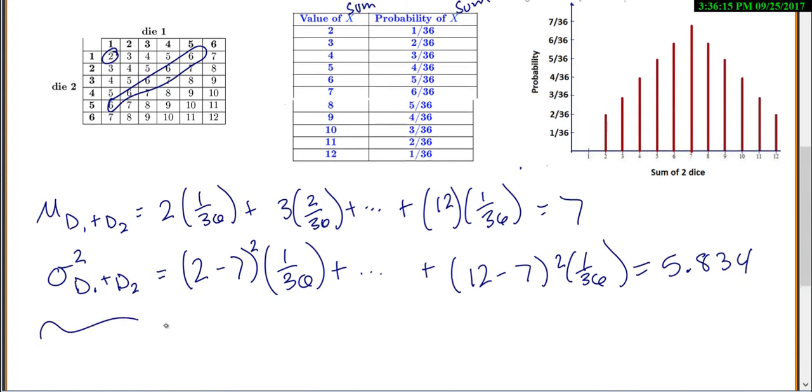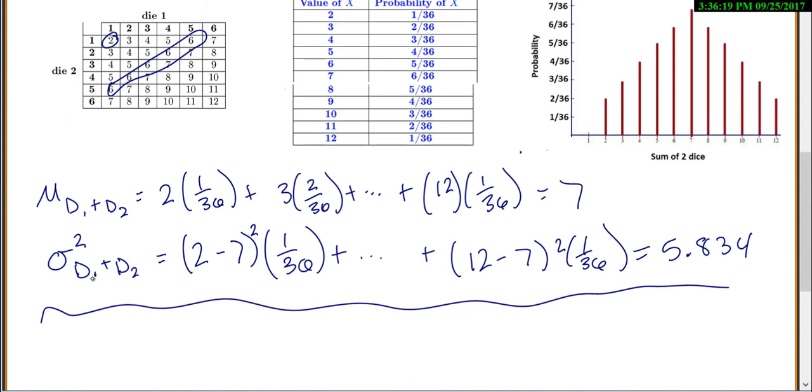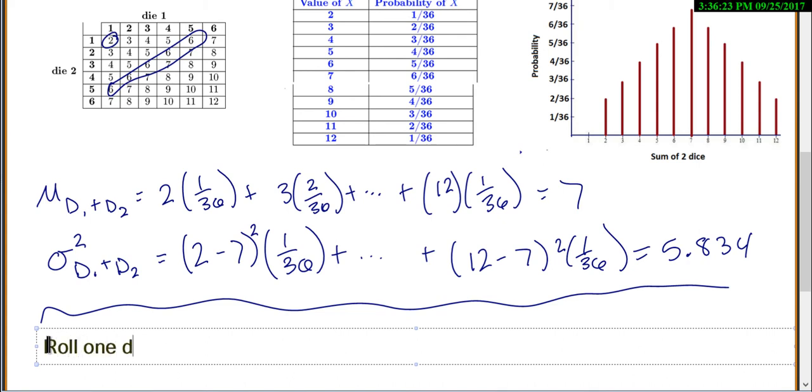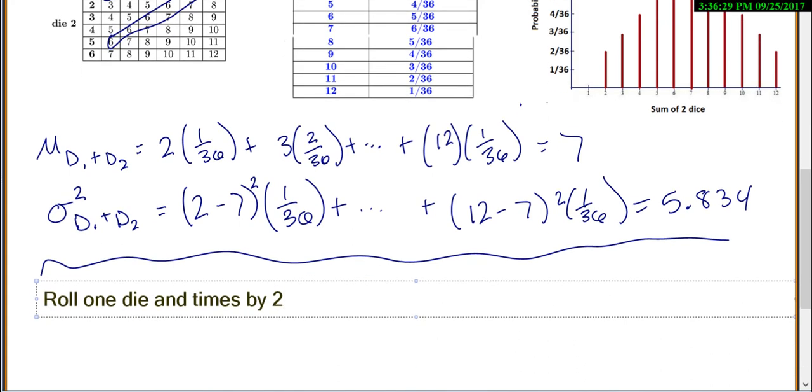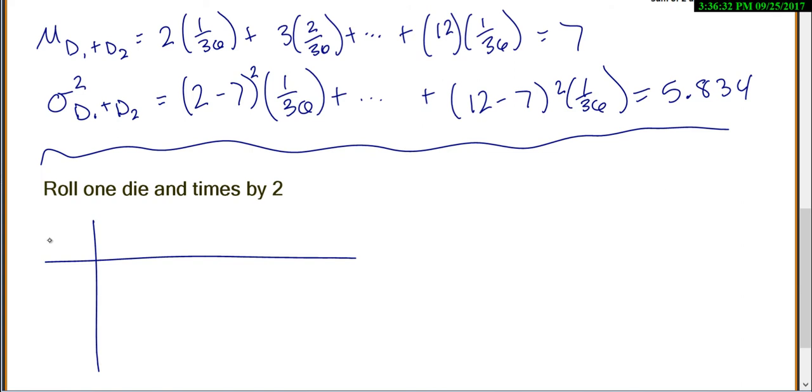Okay, now, let's compare that to what happens if you take one die and times by 2. So if we take one die and times by 2, what are your possibilities? So the die can be 1, 2, 3, 4, 5, or 6. And the die times 2, your possibilities are 2, 4, 6, 8, 10, and 12.